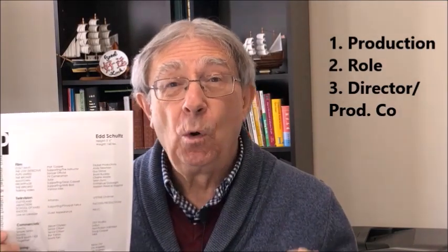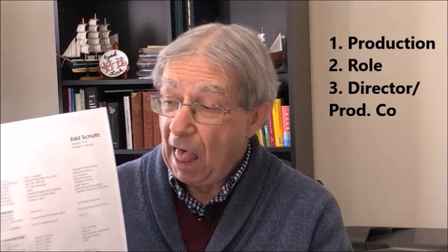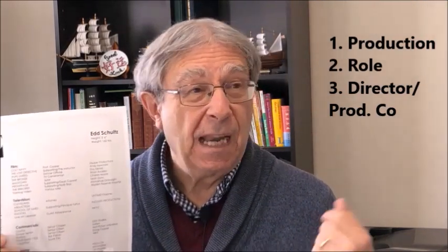What you need to do is have a three-column resume. The first column will have the name of the production — the name of the movie, for example, A Christmas Carol. The second column will have the role that you played, Ebenezer Scrooge. The third column will have either the name of the director or of the production company — Metro-Goldwyn-Mayer, Steven Spielberg. Those are the three major columns. If you don't have those three columns, the casting director, as soon as they look at your resume, it's gone.